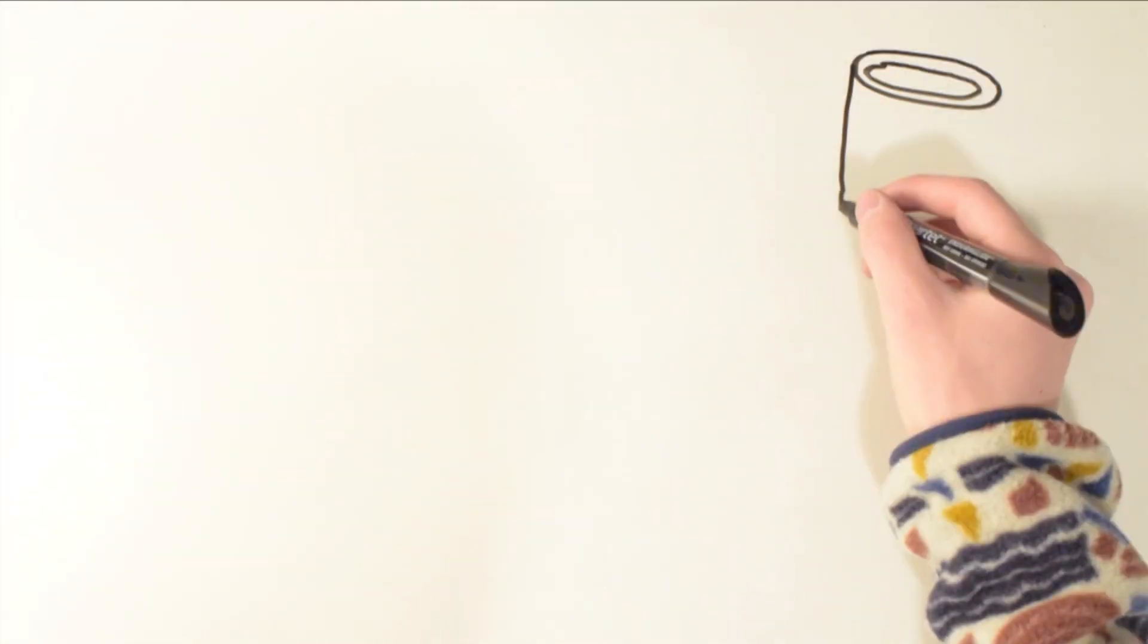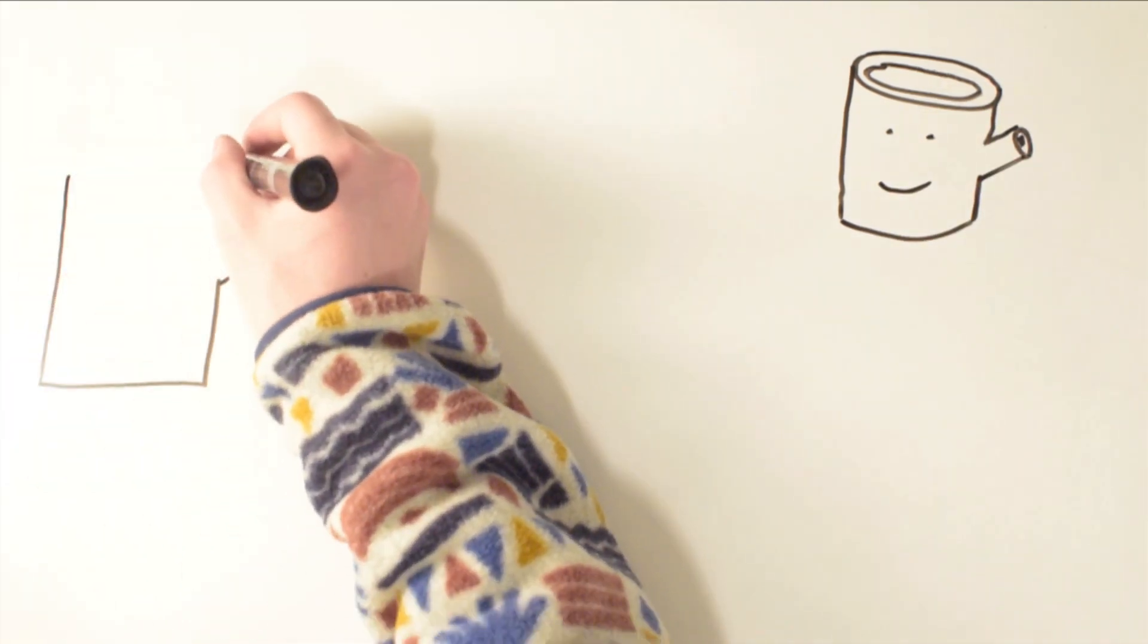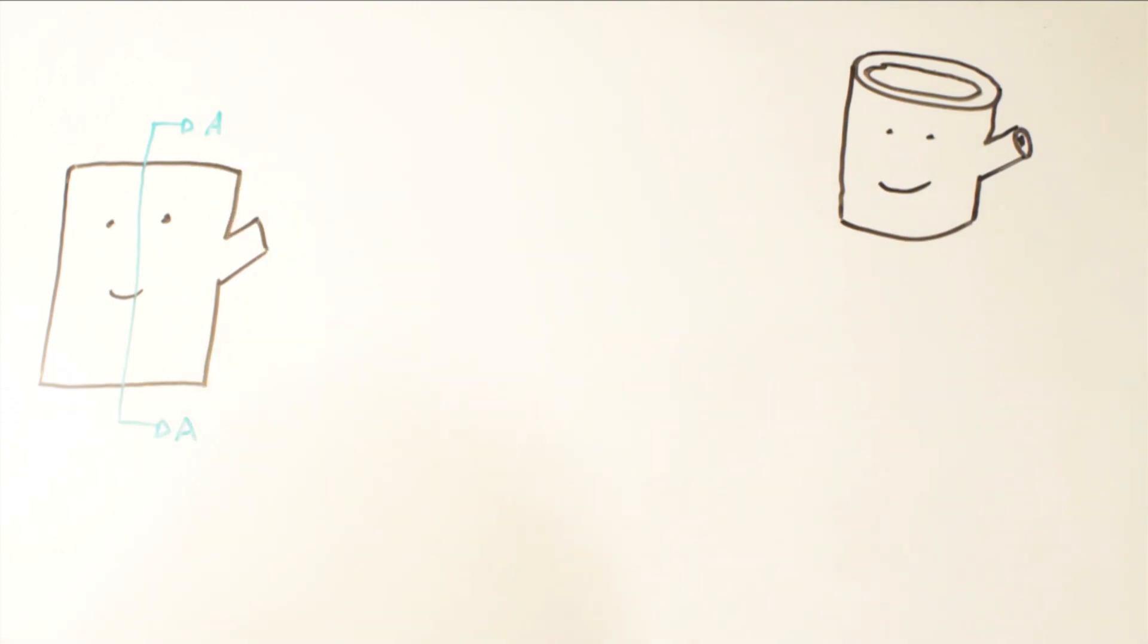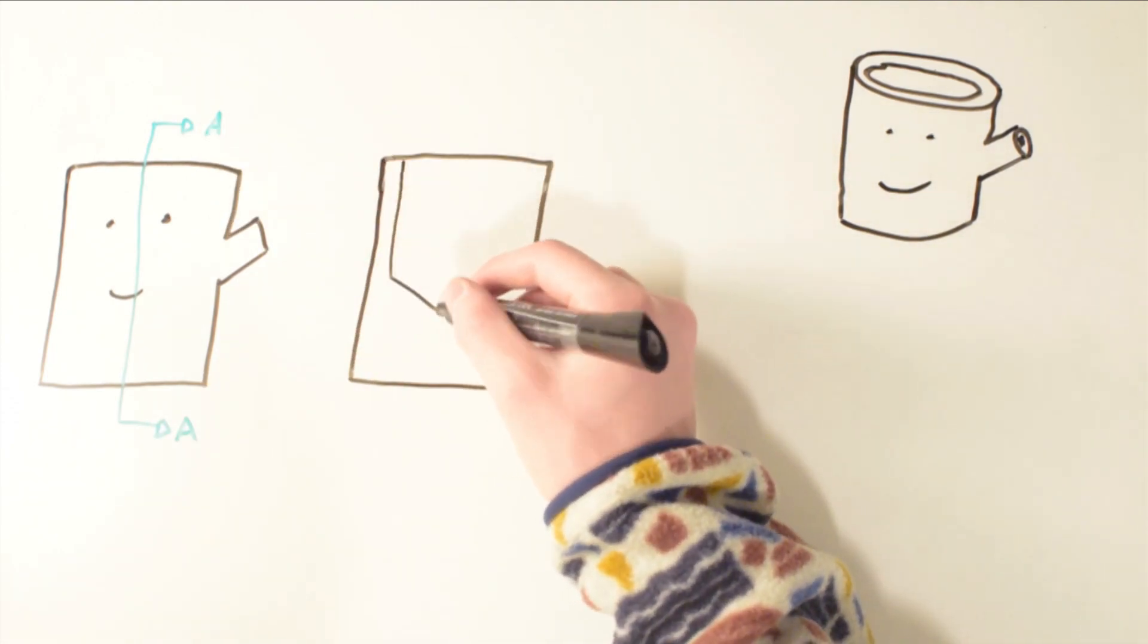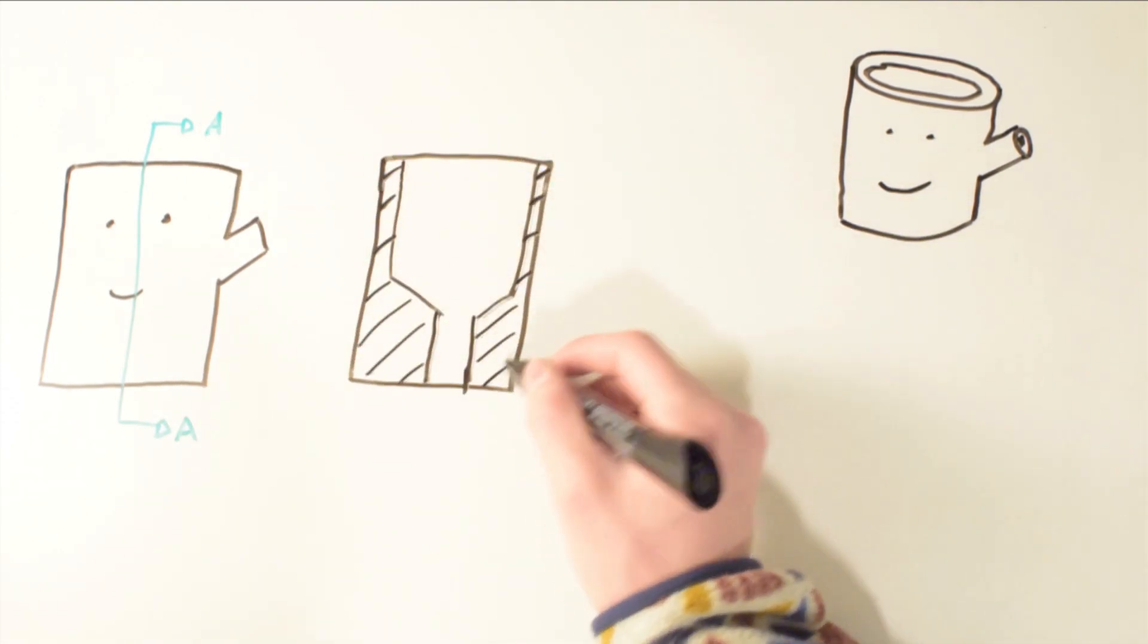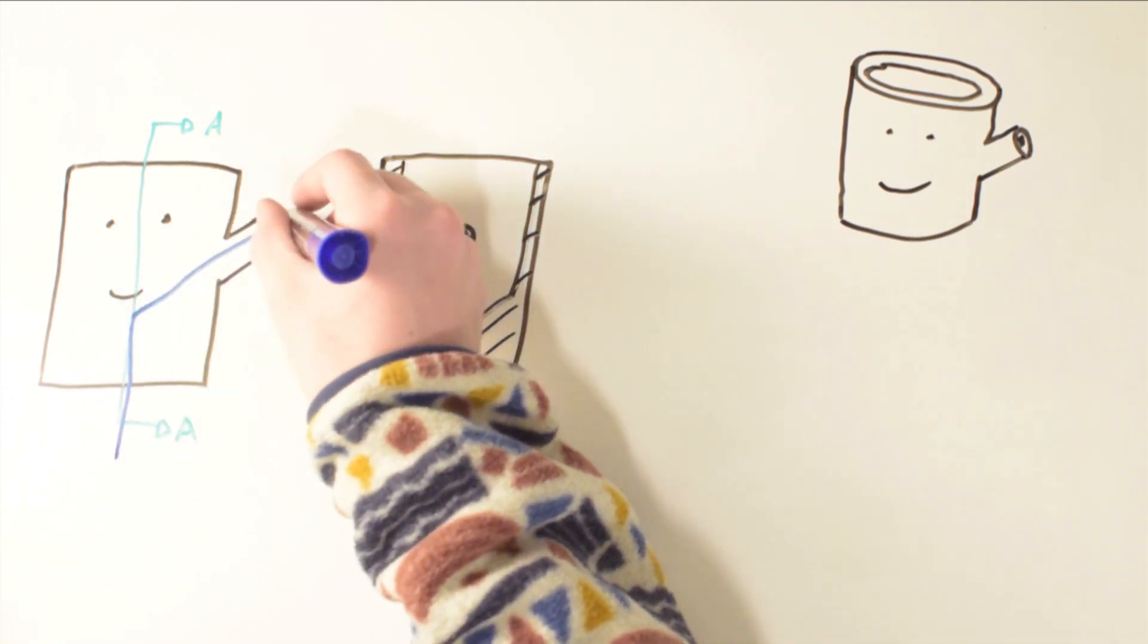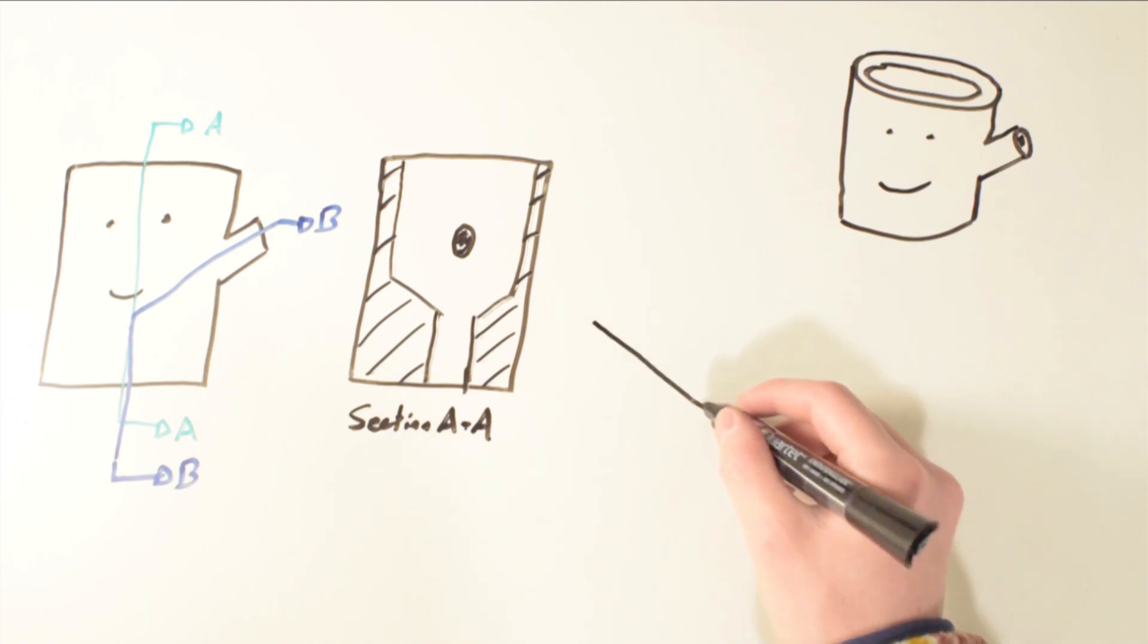Because orthographic views only show the outside of a part and some parts have internal geometry, section views may be added. A section view in its most basic form is two arrows connected by a line. These arrows will each have a letter to label it, and the line is basically mimicking a cut line. If you were to cut a part at that line, the arrows would be telling you which direction to be looking at the part at.